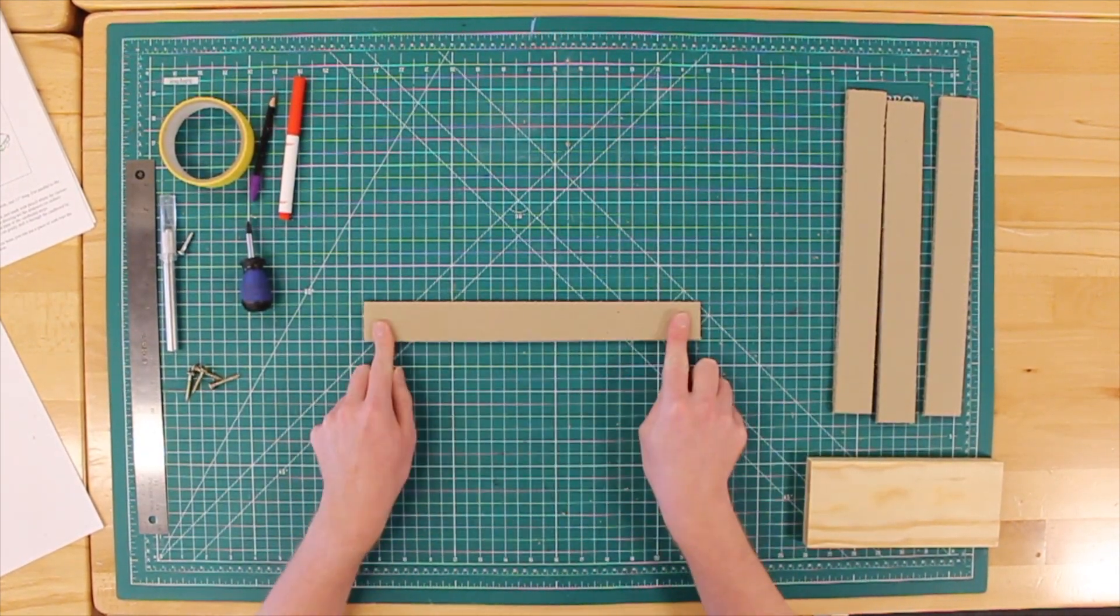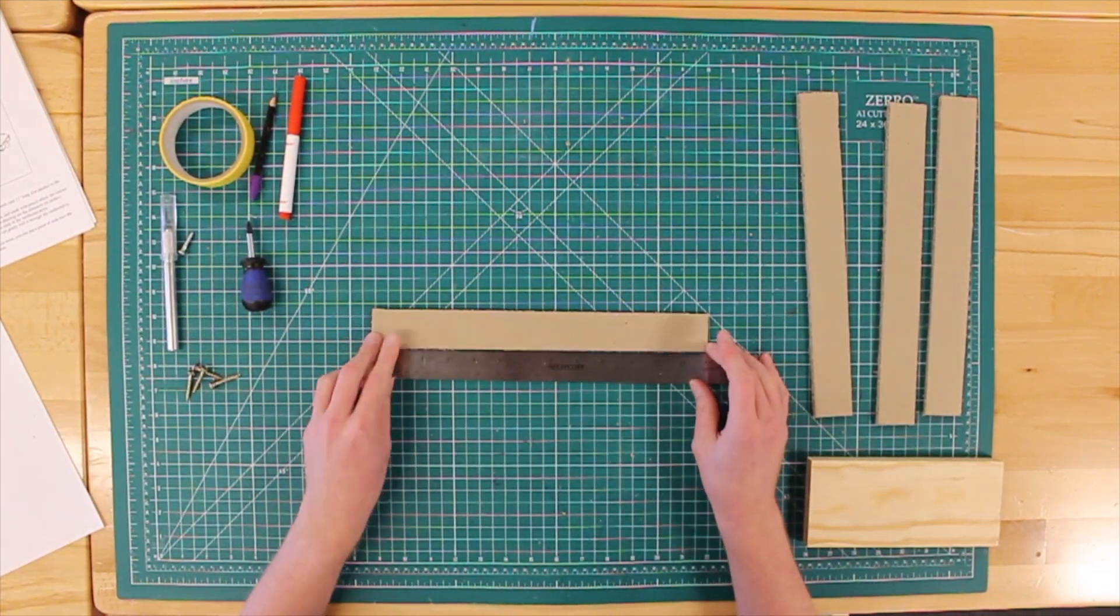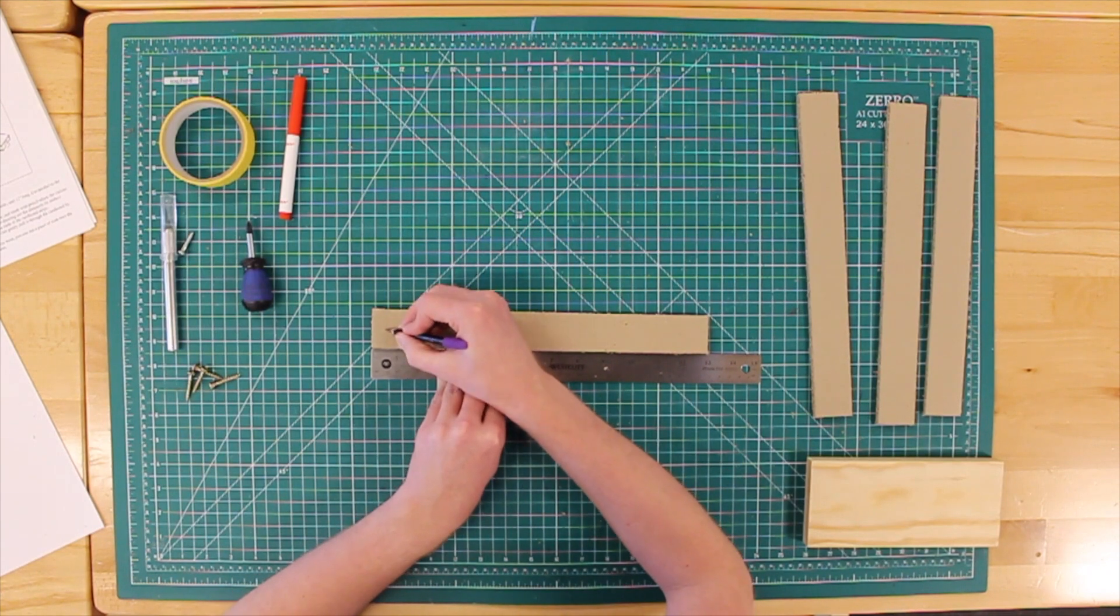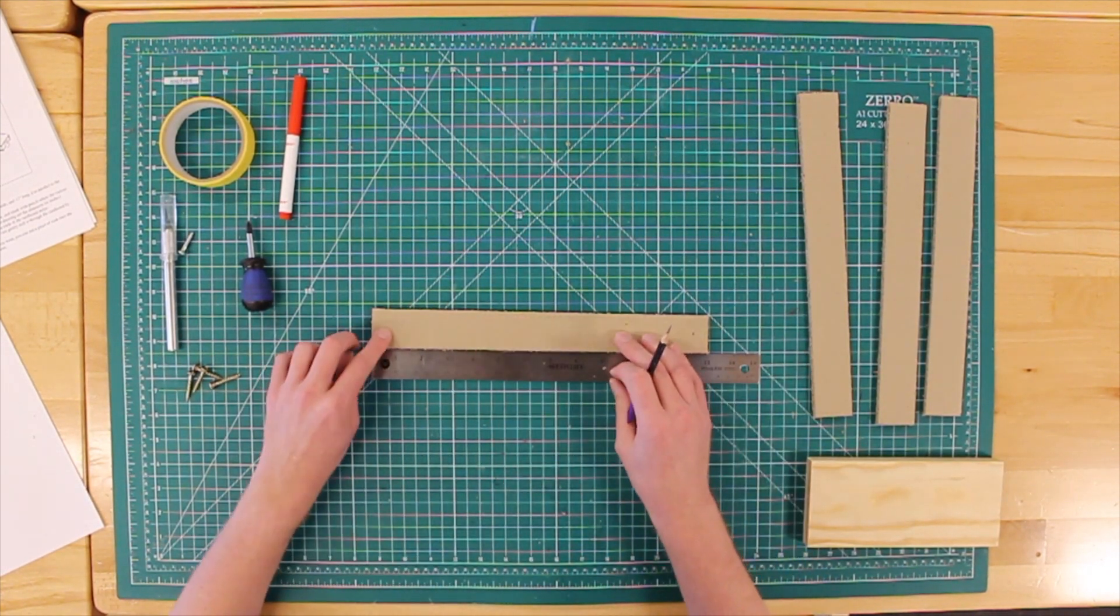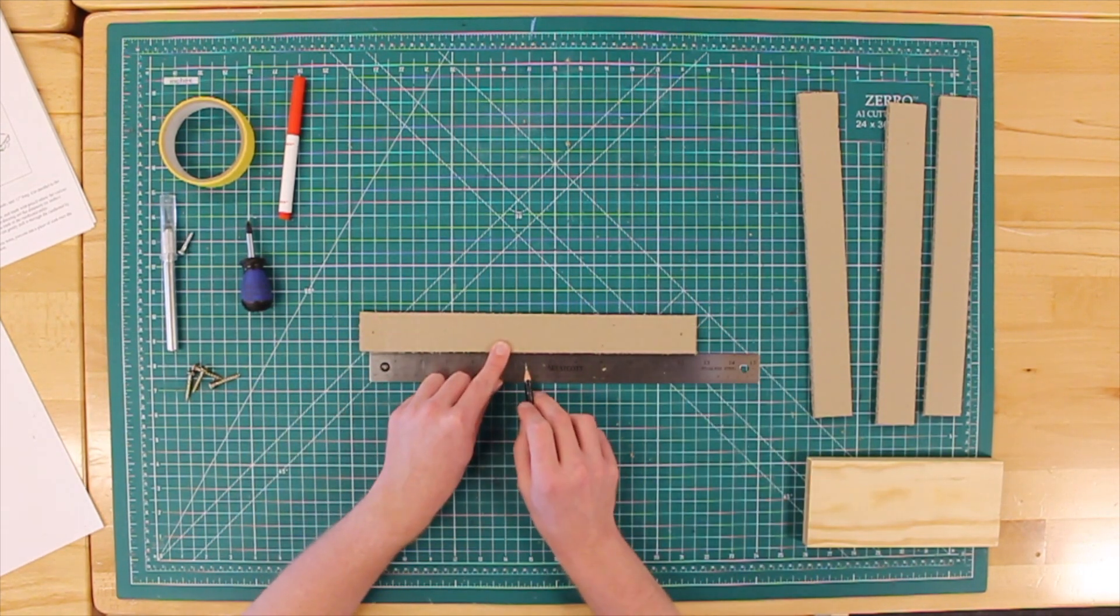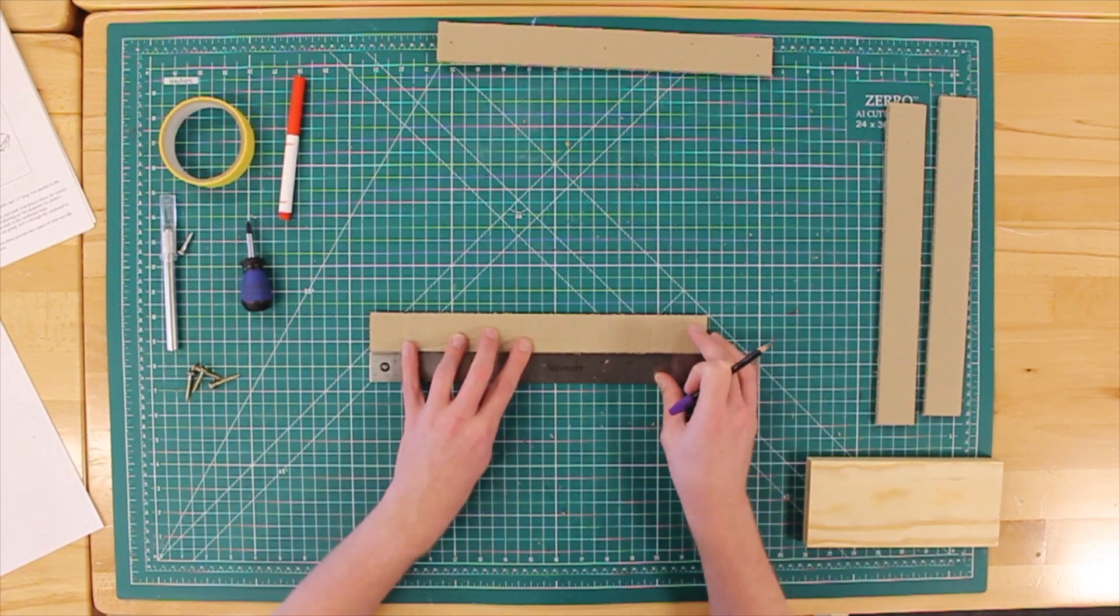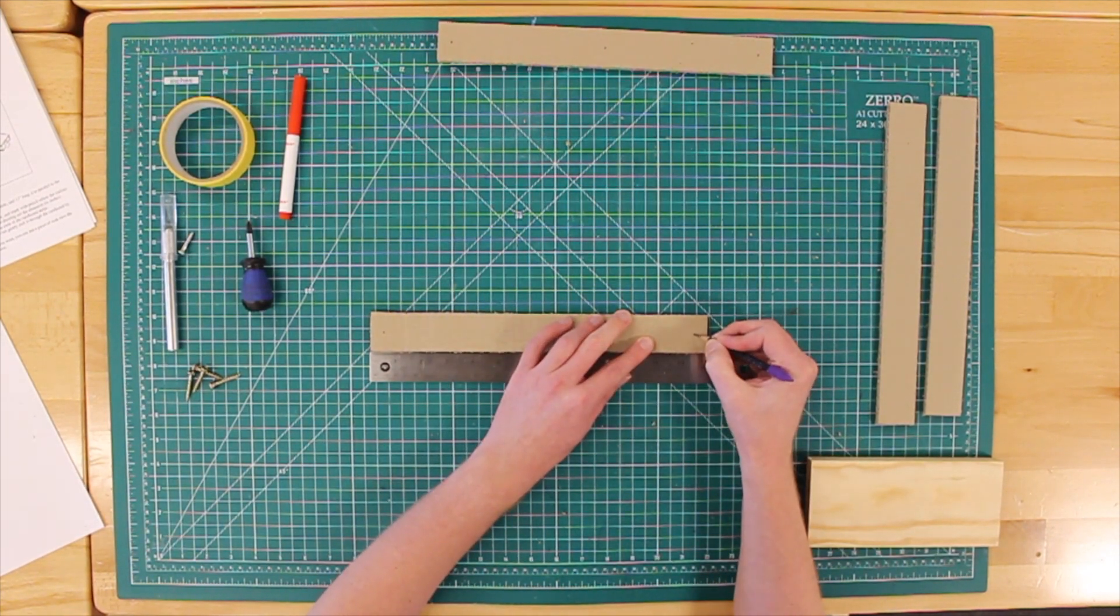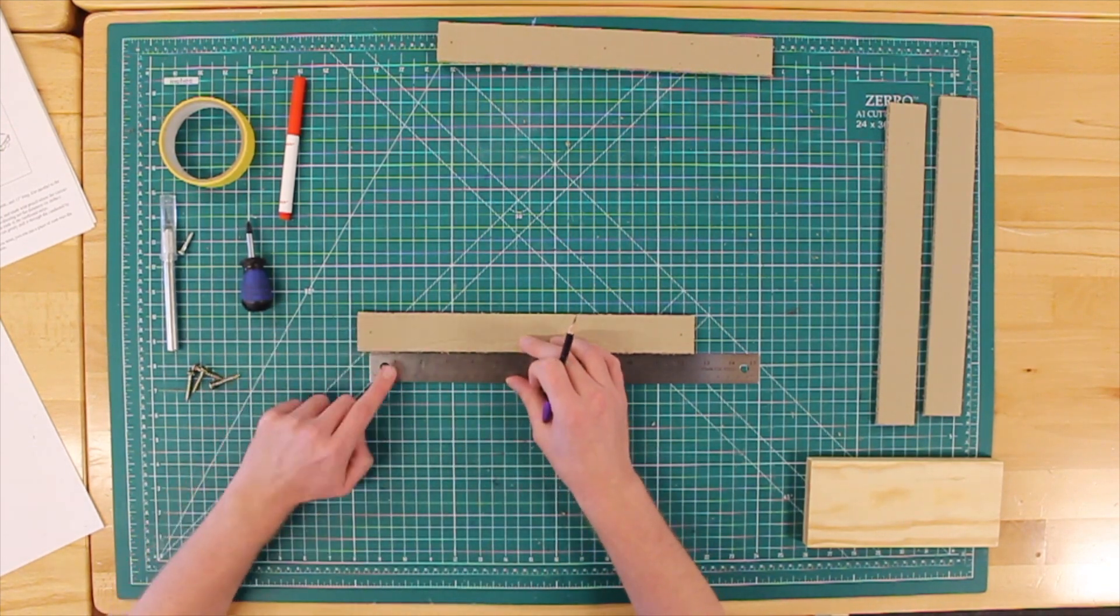The next step is to mark the pivot points we need for our wood screws. Take one thirteen inch strip and mark a dot in the center of the strip a half an inch on both sides. Then from those points mark a point in the middle at six inches. Take another and mark a dot a half inch in on both sides. This time from one dot measure three inches in and place a mark.